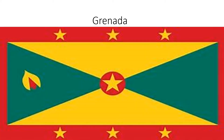Grenada: three yellow stars at the top and three yellow stars at the bottom, and a big yellow star in the middle that has a red circle behind it, and two green triangles and two yellow triangles forming a rectangle, with red around them.